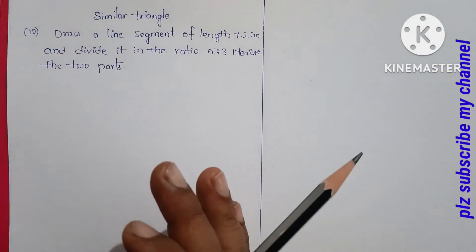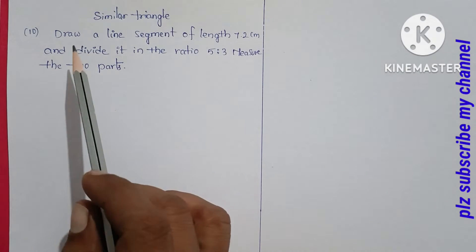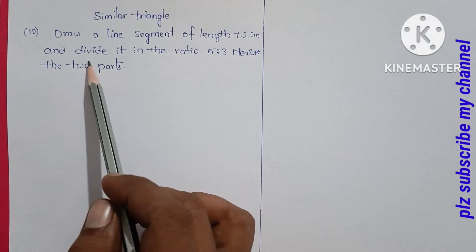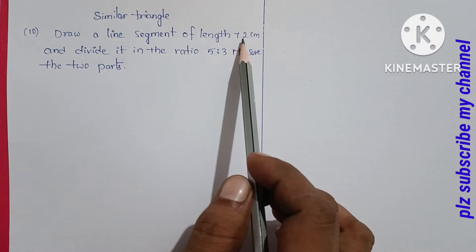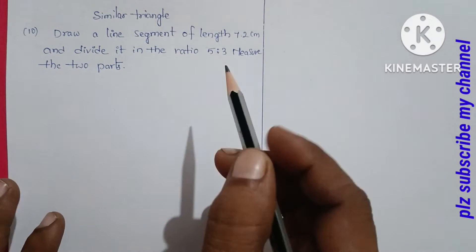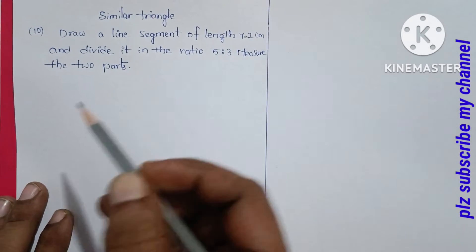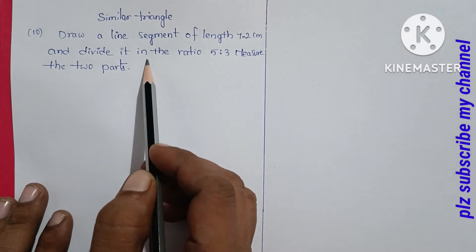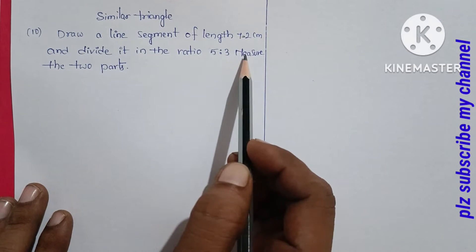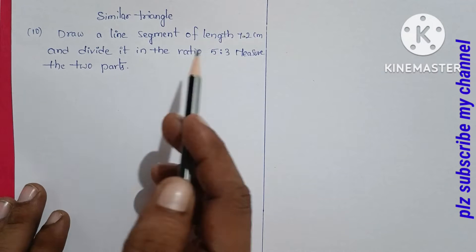Let me draw a line segment of length 7.2 centimeters. The line segment is 7.2 centimeters. Now divide it in the ratio 5 is to 3. Divide it and measure the two parts.